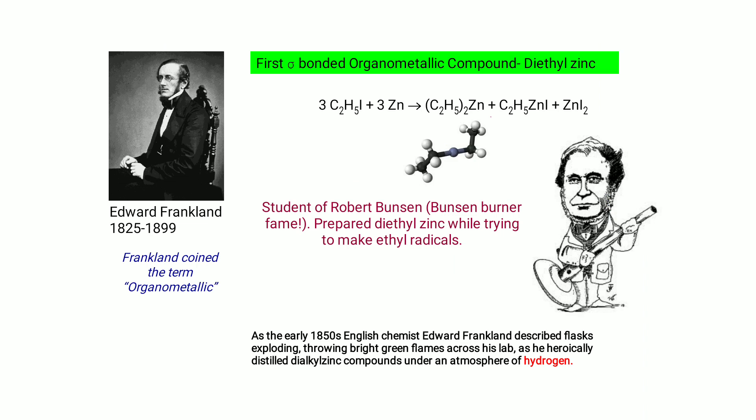The first sigma-bonded organometallic compound is diethyl zinc, discovered by Edward Frankland (1825–1899). Frankland coined the term 'organometallic' and was a student of Robert Bunsen of Bunsen burner fame. He prepared diethyl zinc while trying to make the ethyl radical. By the early 1850s he described flasks exploding and throwing bright green flames across his lab as he heroically distilled diethyl zinc under an atmosphere of hydrogen.